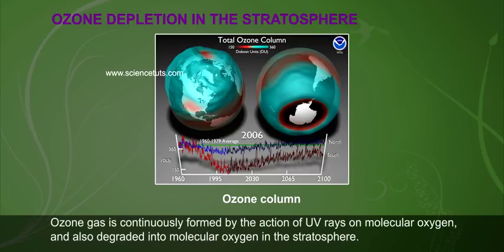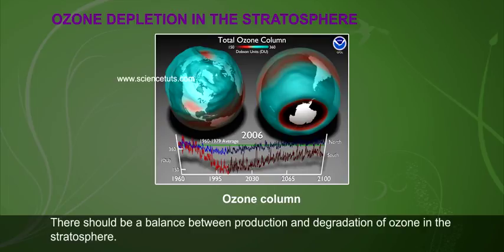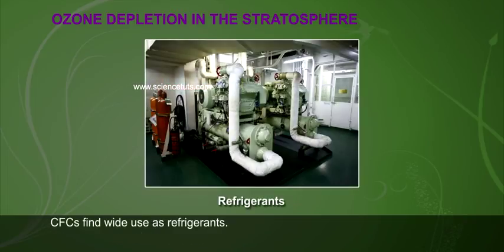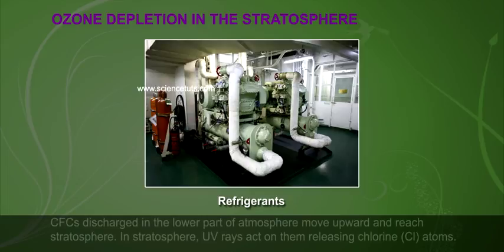Ozone gas is continuously formed by the action of UV rays on molecular oxygen, and also degraded into molecular oxygen in the stratosphere. There should be a balance between production and degradation of ozone in the stratosphere. Of late, this balance has been disrupted due to enhancement of ozone degradation by chlorofluorocarbons (CFCs), which find wide use as refrigerants.